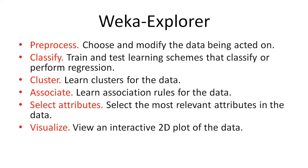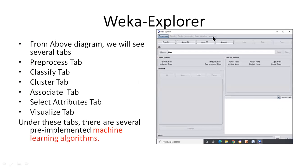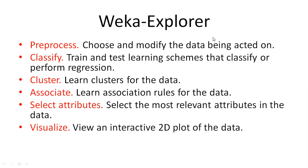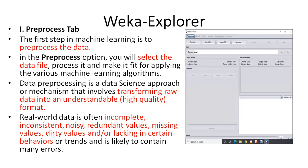You take training data and test the learning schemes. The Cluster tab lets you learn clusters for the data. The Associate tab learns association rules for the data. The Select Attributes tab selects the most relevant attributes — feature selection is very important since some attributes are not useful. The Visualize tab lets you view an interactive 2D plot of the data.